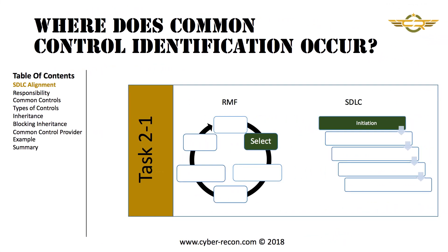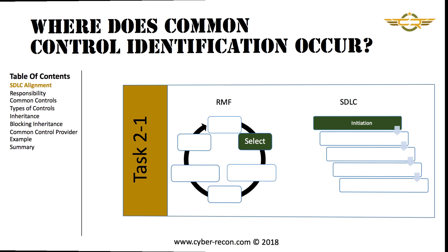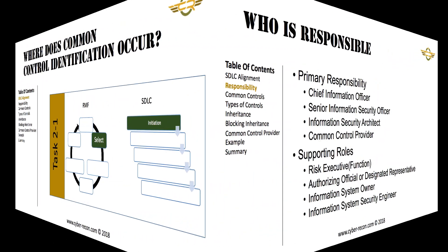Task 2-1, Common Control Identification, is part of Step 2, the Select Step of the RMF, and is part of initiation in the system development lifecycle.